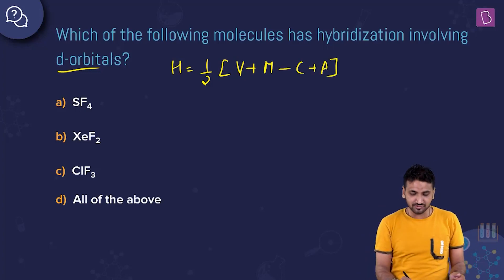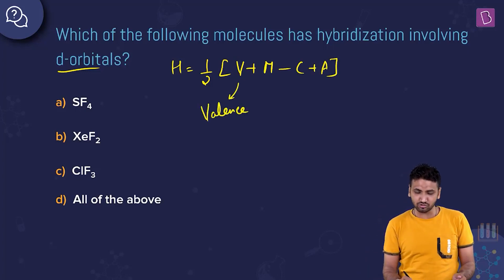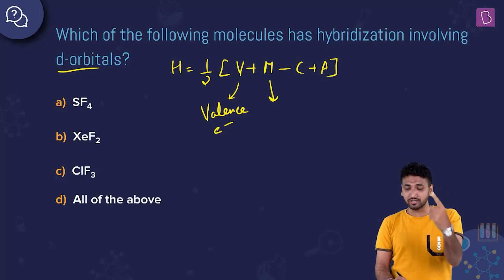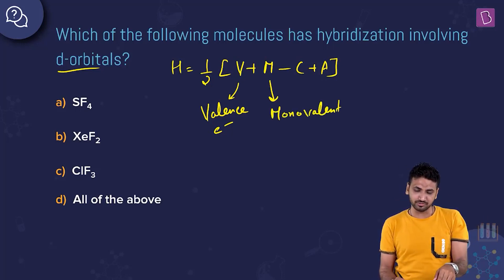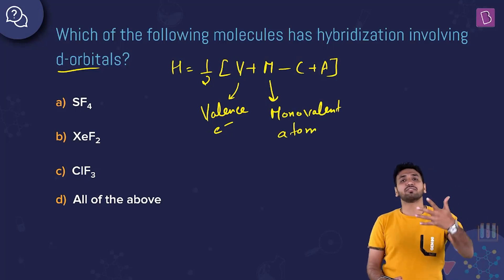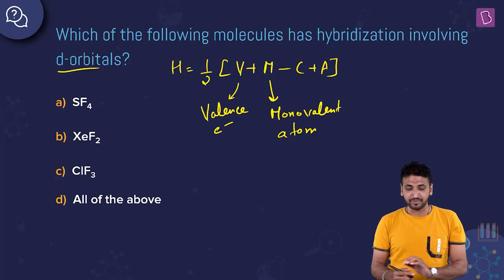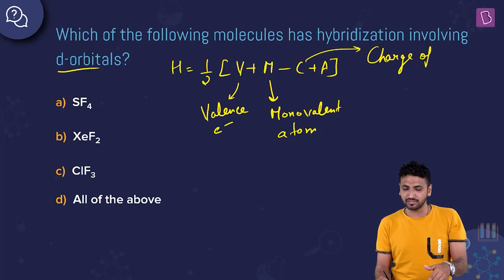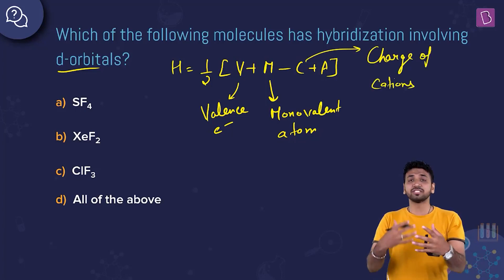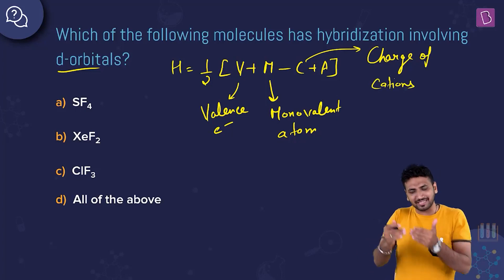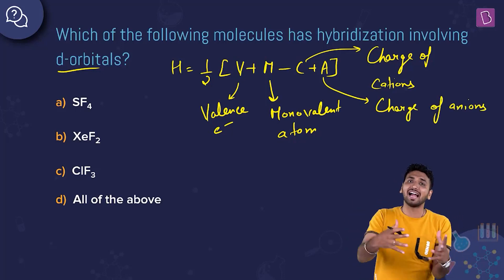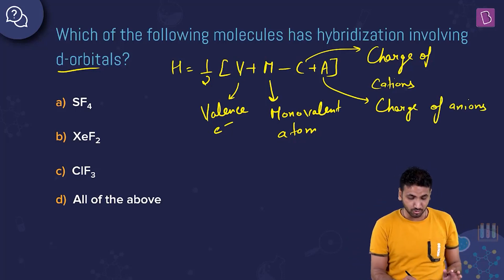In this formula, v stands for the valence electrons of the central atom. M stands for monovalent atoms — for example, hydrogen, fluorine, chlorine, bromine, iodine. C is the charge of the cations, which is positive and must be subtracted. A is the charge of the anions, which is negative and is added to the formula. The whole expression is divided by two.